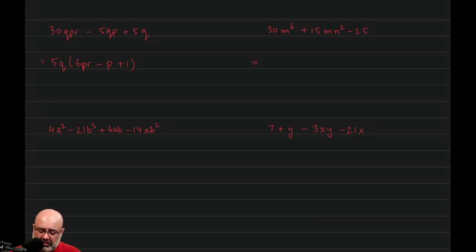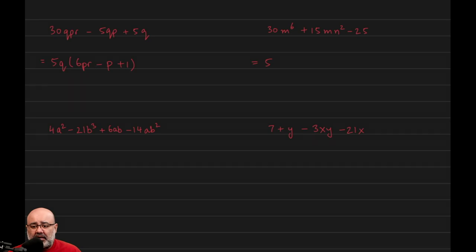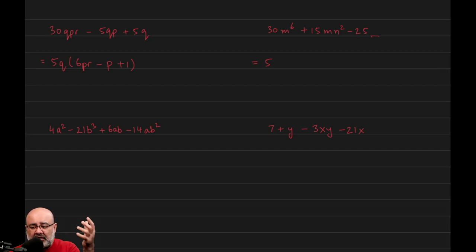For this one, the smallest number in this list is 15. So we look for the largest factor of 15, which is 15 itself. 15 goes into 30, yes. 15 goes into 15, yes. But 15 does not go evenly into negative 25. So then we look for the next largest factor of 15, which is 5. 5 goes into 30, 5 goes into 15, and 5 goes into negative 25. As for the variables, the 25 doesn't have any variables in it, so there cannot be a variable in the GCF. So the GCF is just 5.